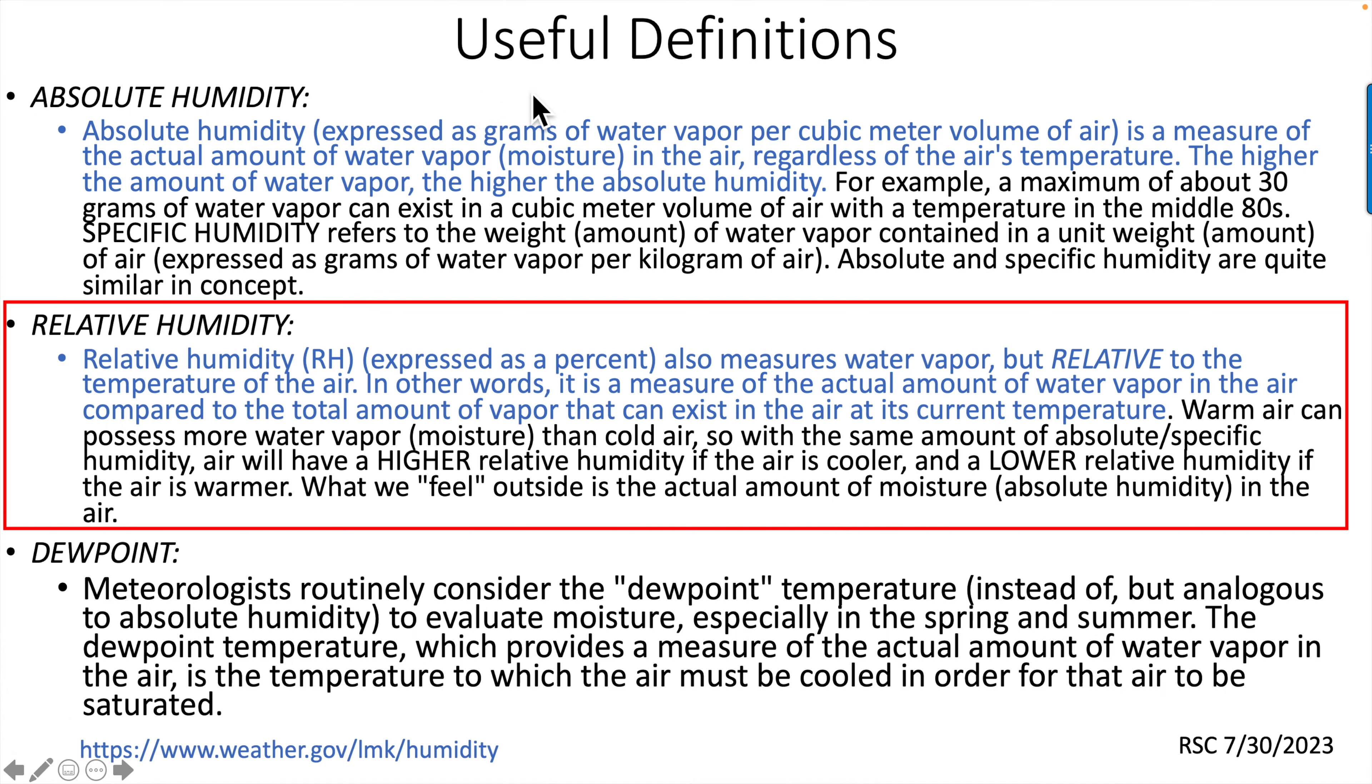Let's quickly go through some useful definitions for this project. First, absolute humidity. This information is from the National Weather Service. Absolute humidity is expressed in grams of water vapor per cubic meter volume of air. It's a measure of the actual amount of water vapor or moisture in air regardless of the air's temperature. The higher the amount of water vapor, the higher the absolute humidity.